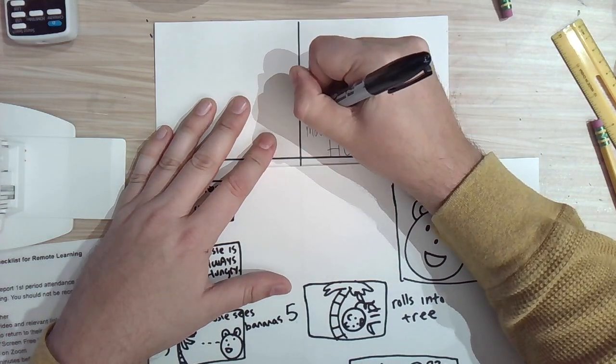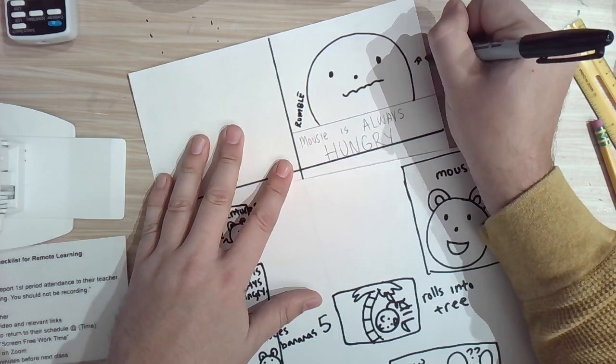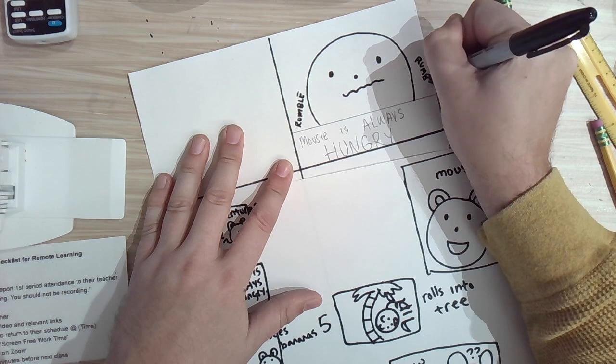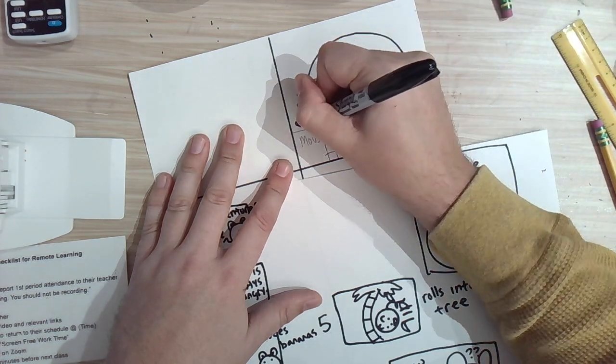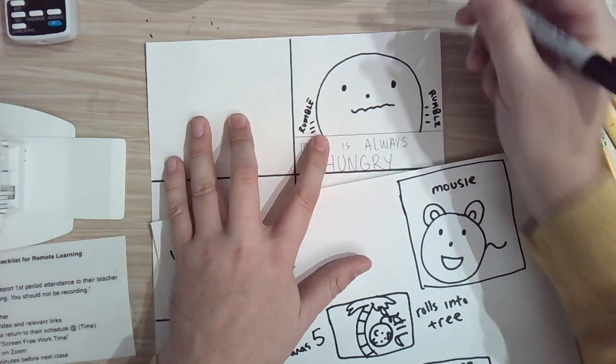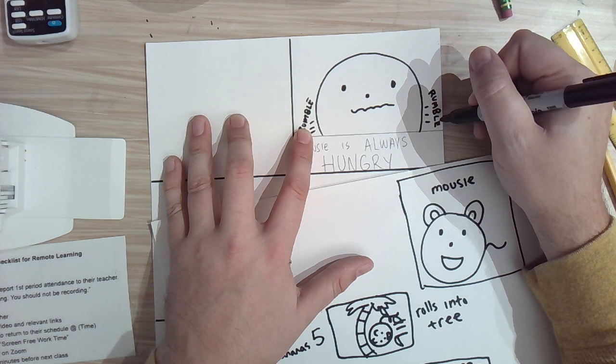And I'm just going to write rumble, rumble. And I'm going to do some lines around his belly. So it looks like his belly's making noise. This is called onomatopoeia.